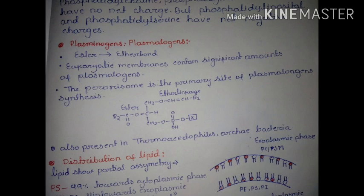70% of the phospholipids present in neurons contain plasmalogen. The peroxisome is the primary site of plasmalogen synthesis. It is also present in thermoacidophilus archaea bacteria. However, although it is synthesized in the peroxisome, the peroxisome membrane does not contain any plasmalogen.